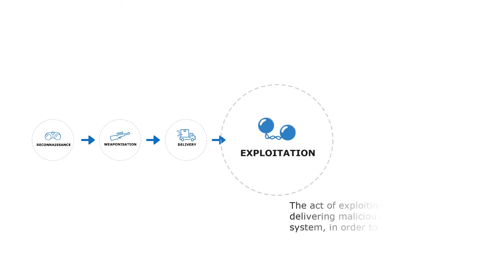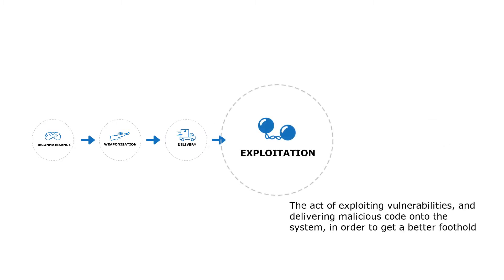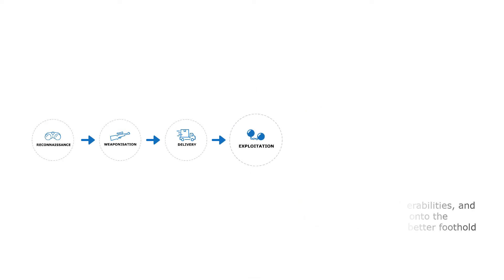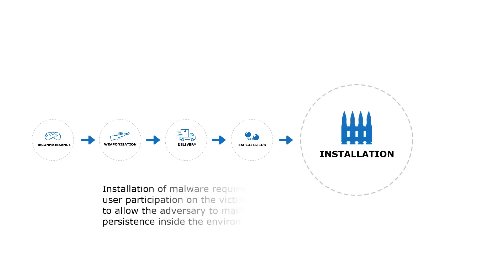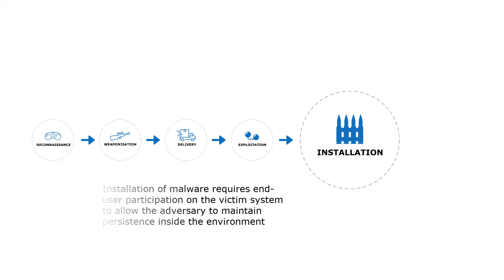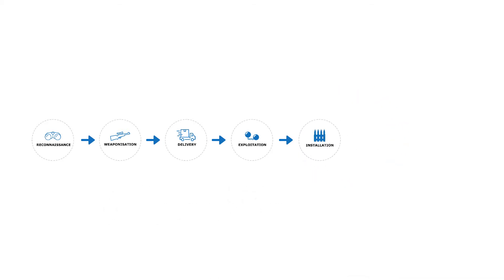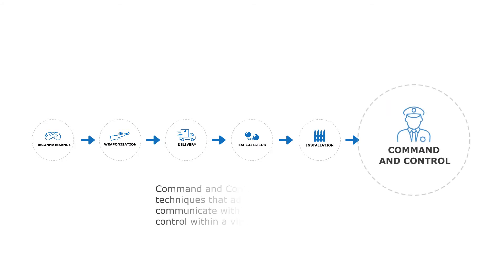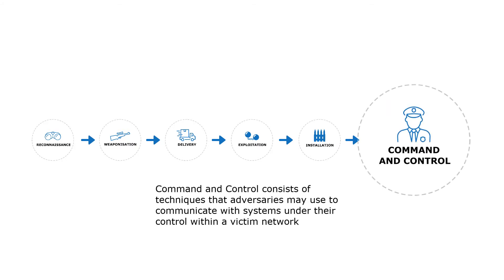Vulnerabilities are exploited and malicious code is delivered onto the system in order to get a better foothold. The malware code installs the payload on the victim system, allowing the adversary to maintain persistence inside the environment. Threat groups use open channels to send specific command and control communications, which the adversaries may use to communicate with the systems under their control.